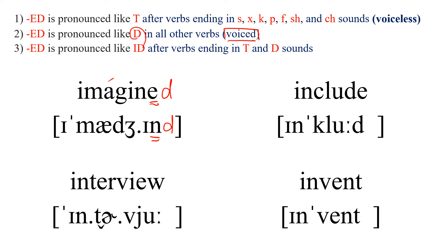And INCLUDE. Stress on the second syllable. This is an E ending, so just put D to make it past. And this is a D ending, which means we add ED here. Read: INCLUDED.